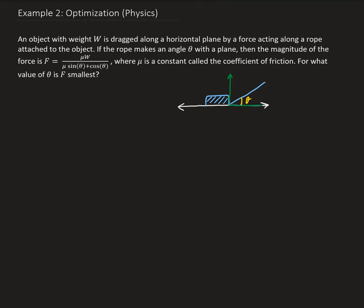In this example, we have an object with weight denoted by W, which is dragged along a horizontal plane by a force acting along a rope attached to the object. If the rope makes an angle theta with the plane,